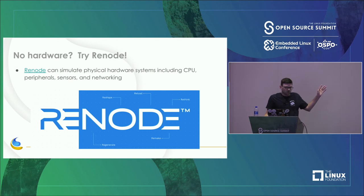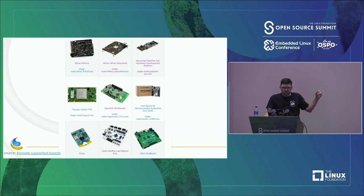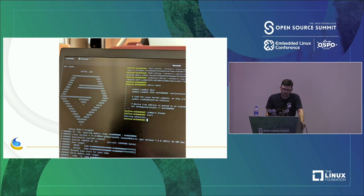If you don't have any hardware at all, one nice option is Renode — an open source project from Antmicro that can simulate a full hardware system. It even has configurations for different boards, including the SiFive Unleashed. You can install Renode and have the full SiFive Unleashed running on your laptop. Because a modern laptop is very fast compared to these RISC-V boards, it actually runs pretty well — it doesn't feel like a super slow simulator.